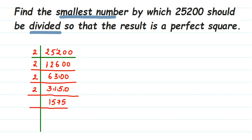If you have any other method you can follow that. Now the number ends with 5, so we'll check if it goes in a 3 table — it does. 3 × 5 = 15, giving us a remainder, and 3 × 5 = 15 again, continuing the factorization.